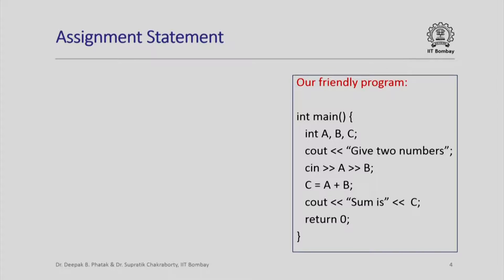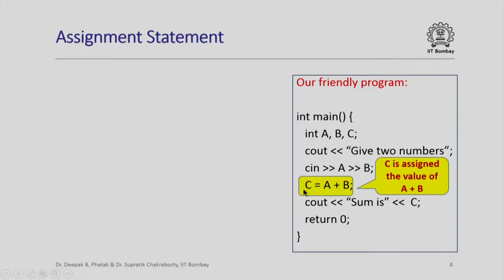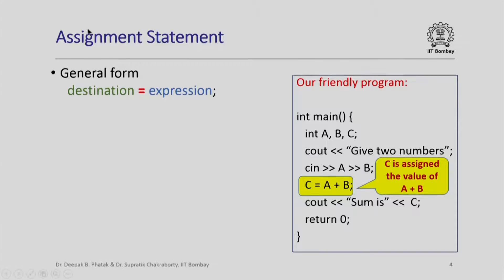Here is our friendly program which sums two numbers and outputs the result. In this program I have highlighted this particular statement which basically says that C is assigned the value of a plus b. The general form of an assignment statement is a destination, then the equal-to sign, and then an expression. Note that I did not say 'C equals a plus b' — I said 'C is assigned the value of a plus b.'